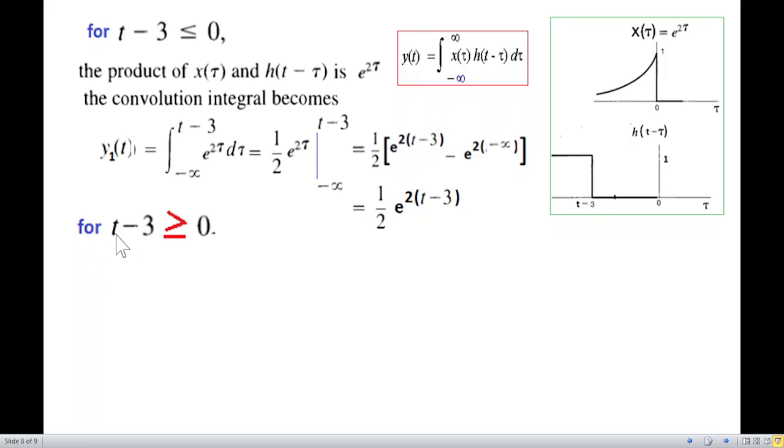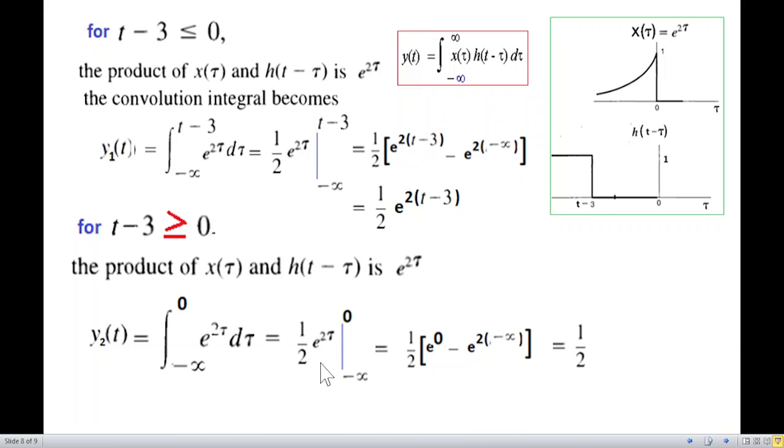Now for t minus 3 greater than zero, that is when we have crossed this area, already in the previous slide, we found that the value remains same, e raised to the power 2t. Only the integration limit changes. So the integration limit changed from minus infinity to 0. So we'll now integrate this. Same way, only the limit changes. And e raised to the power 0 will be, first one e raised to the power 0, which is equal to 1. And the second is e raised to the power minus infinity. This will be 0. So our answer is 1 over 2. e raised to the power 0 is 1. So this is our answer. So these are the two values of y.